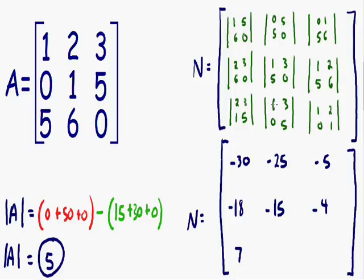Moving on to the bottom middle matrix: 1 times 5 is 5, and 3 times 0 is 0 — so 5 minus 0 equals positive 5. And for the bottom right: 1 times 1 is 1, and 2 times 0 is 0 — so 1 minus 0 equals positive 1. So now we have replaced our matrix N with the determinants of all these 2 by 2 matrices.